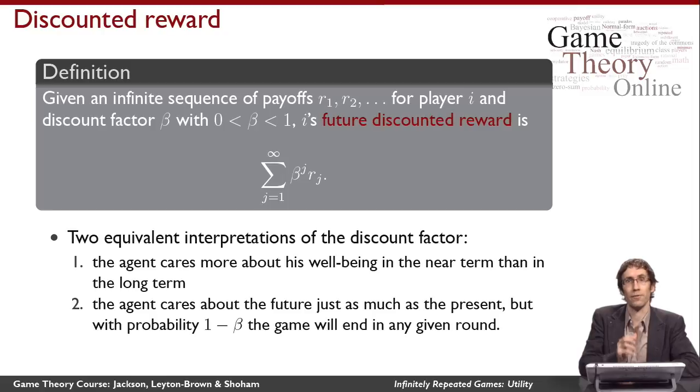But every time we play the game, we're going to flip a coin. And with probability 1 minus beta, the game is going to just end. And with probability beta, the game is going to continue.